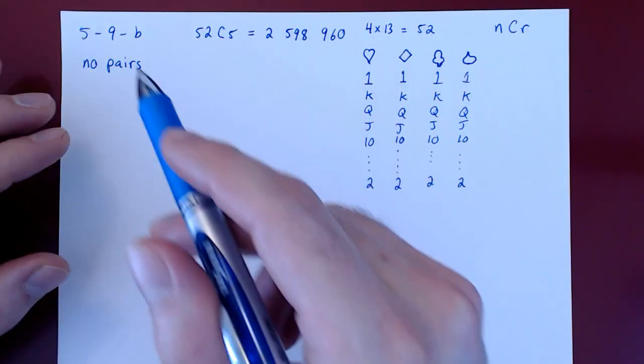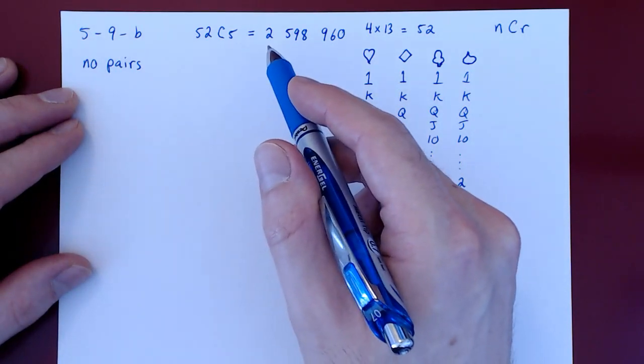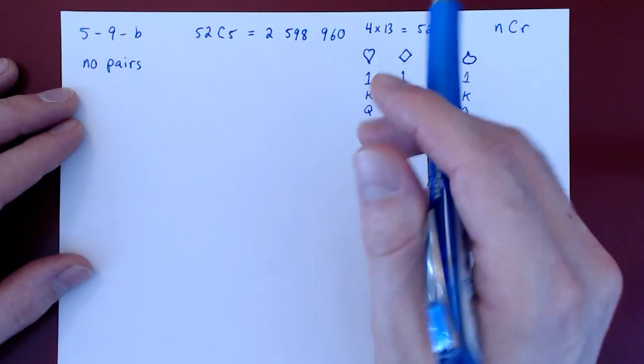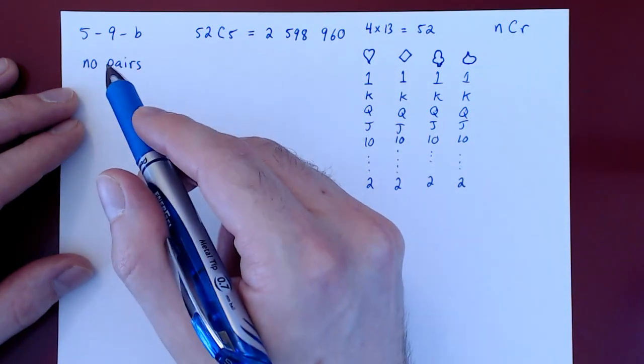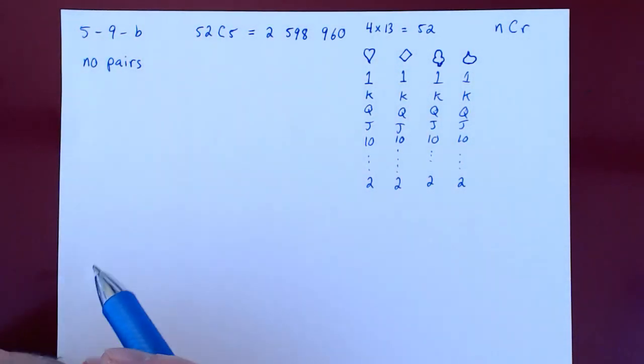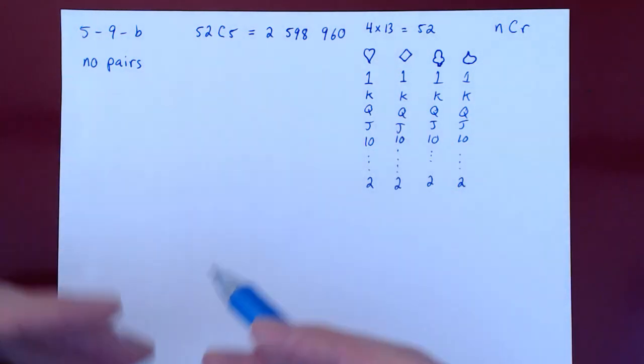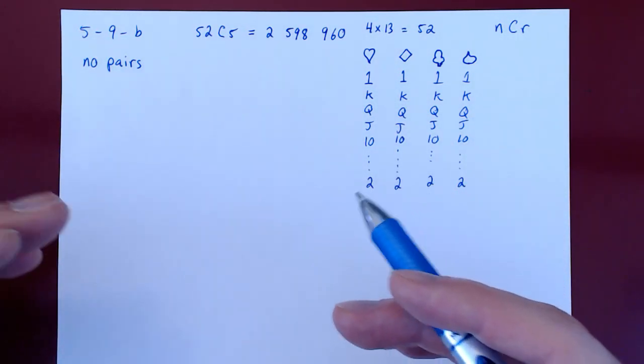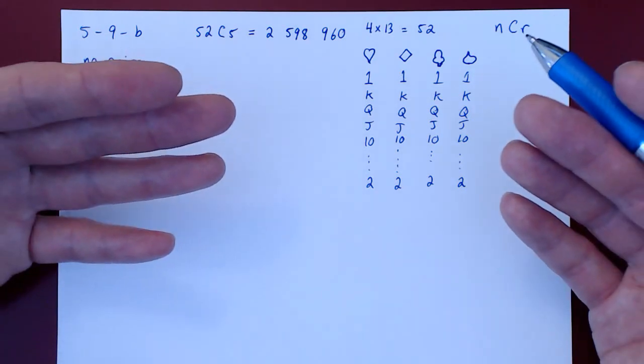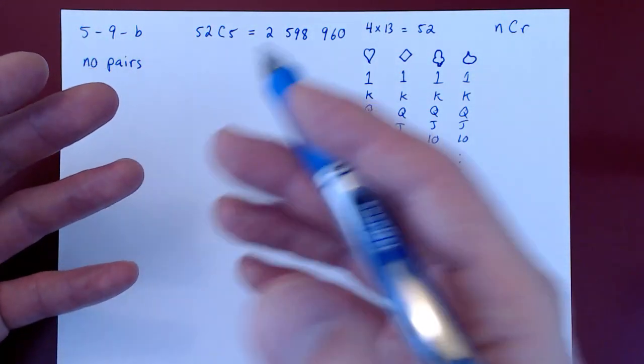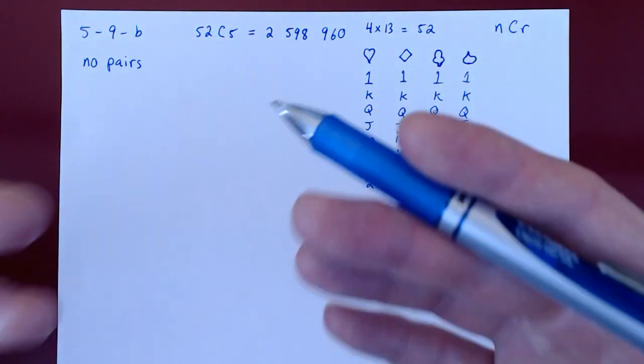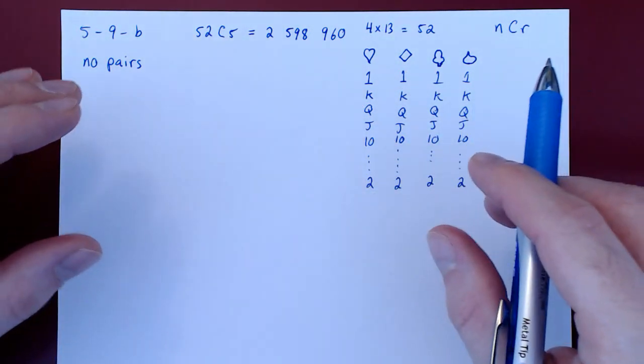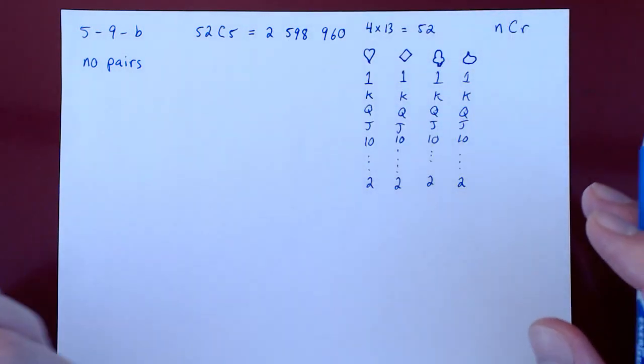Now in 9b, we're asking, out of about 2.6 million distinct possible hands of five cards, how many of those have no pairs? When we say no pairs, we're thinking of a hand of poker. We mean no pairs or anything stronger. Here we're saying no pairs and nothing stronger.